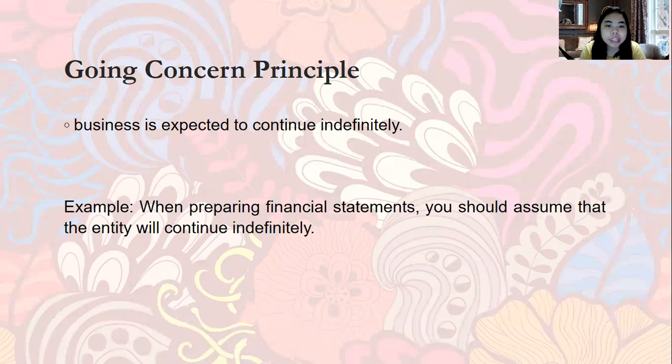When preparing financial statements, you should assume that the entity will continue to operate indefinitely. That's how we view the business entity under the going concern principle — we do not assume that the business will end after one year or two years; we assume it will continue to operate for an indefinite period of time.